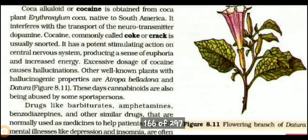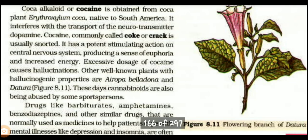The third category is coca alkaloids, or cocaine. It is obtained from the coca plant, whose scientific name is Erythroxylum coca, native to South America. It interferes with the transport of the neurotransmitter dopamine. Cocaine, commonly called coke or crack, is usually snorted — inhaled through the nostrils with the help of a rolled paper.